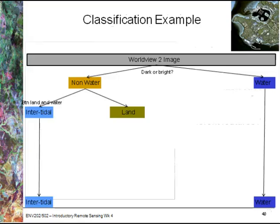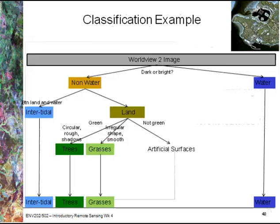So then I'd like to break down the non-water areas a little bit more. For example, using a contextual cue, is it between land and water? In which case, I'm calling it tidal. And otherwise, I would say it's land.